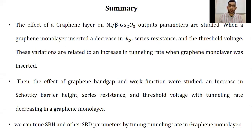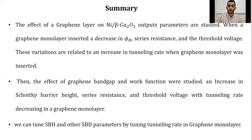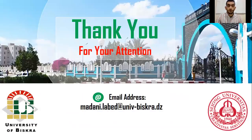In summary, the effects of graphene monolayer on nickel/beta-gallium oxide Schottky barrier diode were studied. When a graphene monolayer is inserted, a decrease in Schottky barrier height, series resistance, and threshold voltage is observed. These variations are related to an increase in tunneling rate when the graphene monolayer was inserted. Then, effects of graphene bandgap and work function were studied: an increase in Schottky barrier height, series resistance, and threshold voltage with tunneling rate decreasing in graphene monolayer. In conclusion, we can tune Schottky barrier height and other Schottky barrier diode parameters by tuning tunneling rate in graphene monolayer. Thank you for your attention.